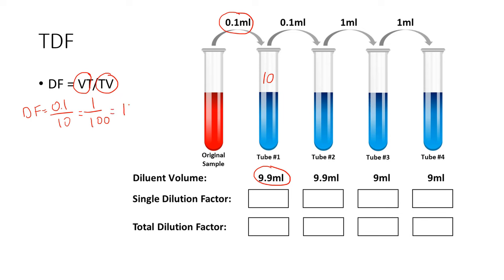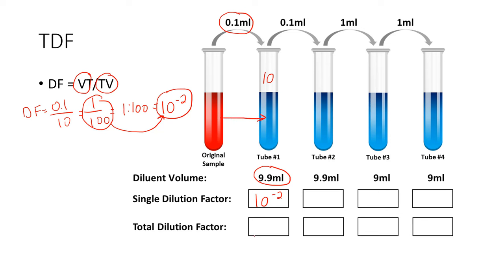So you could say that the dilution factor is 1 to 100, or written as a fraction, 1 over 100. A better way to write it in this case would be 10 to the negative 2. So our single dilution factor is 10 to the negative 2. Since this is only tube number 1, the total dilution factor is also 10 to the minus 2.